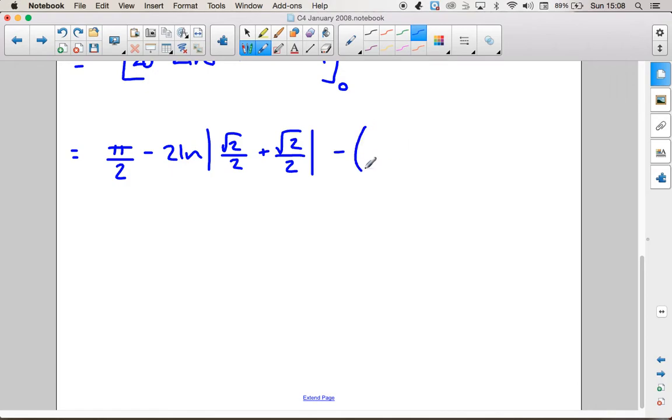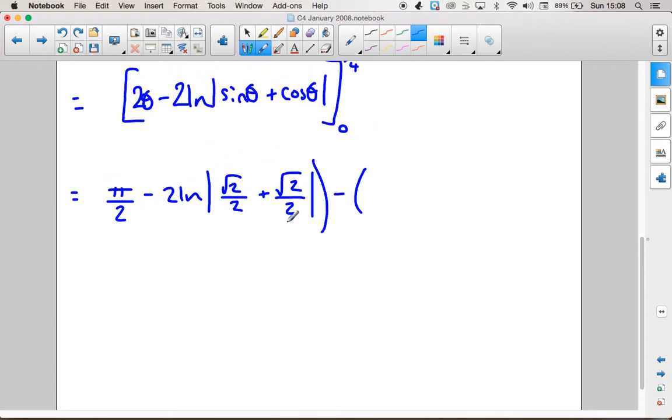Minus what we get when we put 0 in. And we're going to get 0 here. Minus 2 ln of sin of 0, which is 0. Plus cos of 0, which is 1.